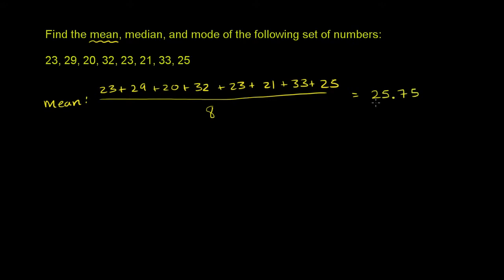So the mean is equal to 25.75. So this is one way to measure the center, the central tendency. Another way is with the median. And this is to pick out the middle number, the median. And to figure out the median, what we want to do is order these numbers from least to greatest.